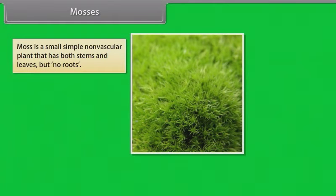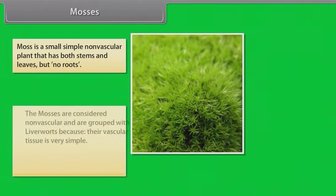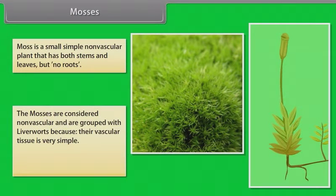Mosses. Moss is a small simple non-vascular plant that has both stems and leaves but no roots. The mosses are considered non-vascular and are grouped with liverworts because their vascular tissue is very simple. Both of them have similar life cycle.